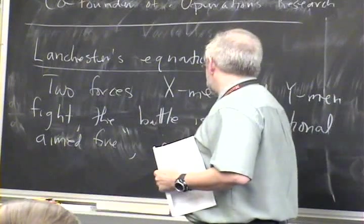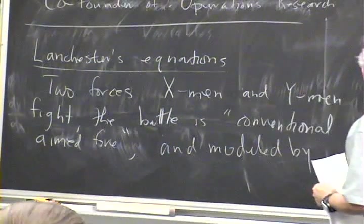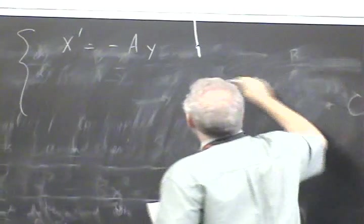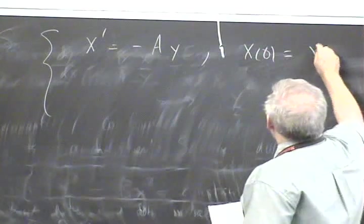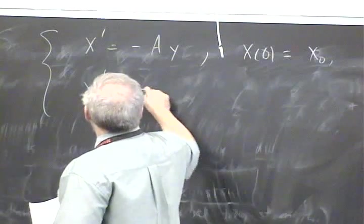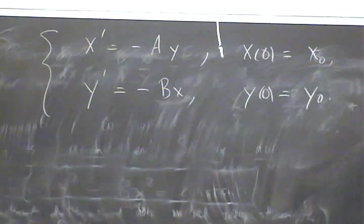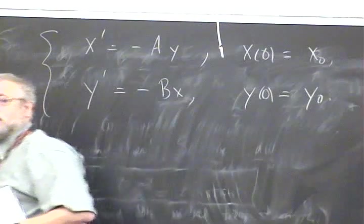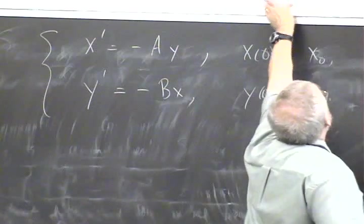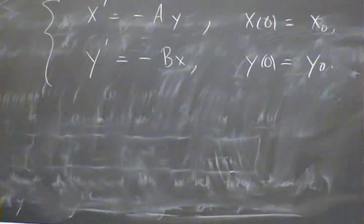The battle is modeled by these two equations: X' = -AY, the initial number of X-men fighting is X₀. Y' = -BX, the initial number of Y-men fighting is Y₀. You might want to try to tuck that string behind the blackboard because on the camera it looks like a line drawn on the blackboard.